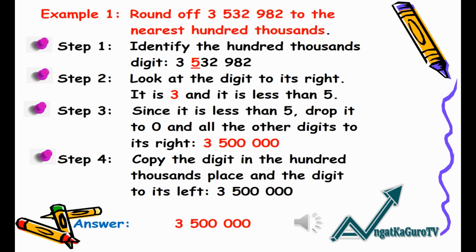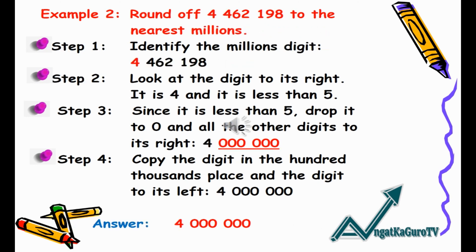Step 4: Copy the digit in the hundred thousands place and the digit to its left. The correct answer is 3,500,000.